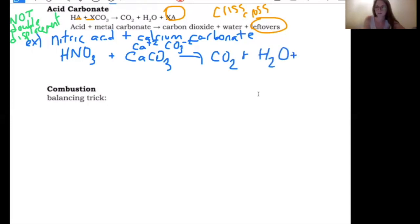And then I just have to figure out the leftovers. And remember that the leftovers are the part of the acid that's not hydrogen and the part of the carbonate that's not carbonate. But I'm going to look at their charges. Ca is a plus two. Nitrate is one of our polyatomic ions is a minus one. So crisscrossing those, I would get CaNO3 in parentheses two.